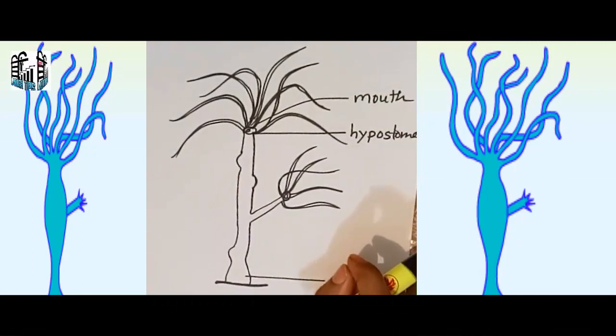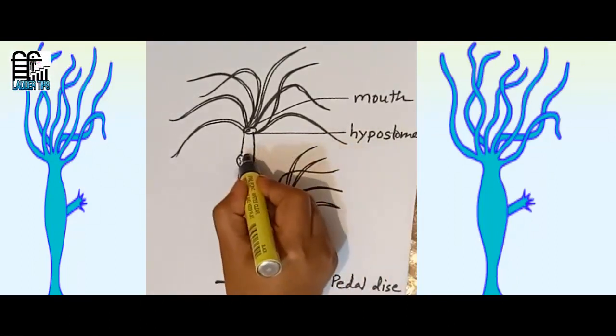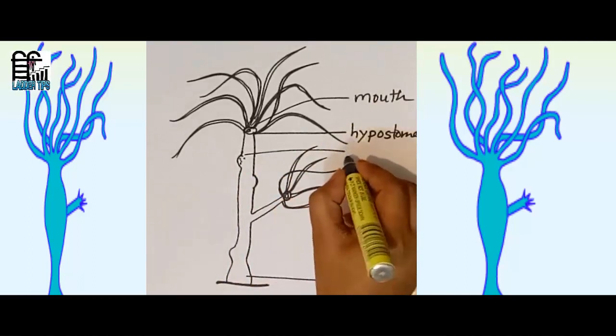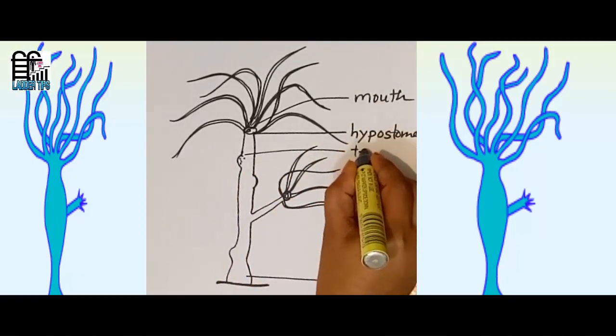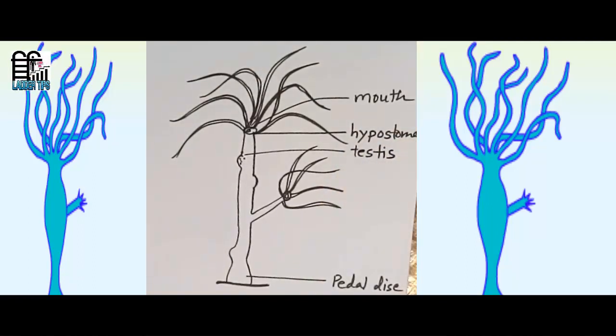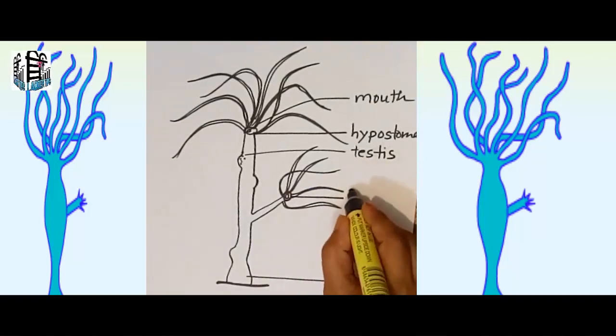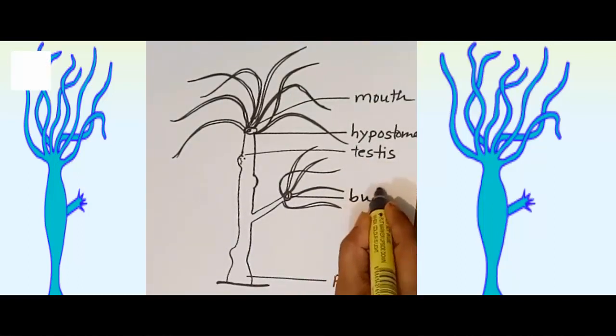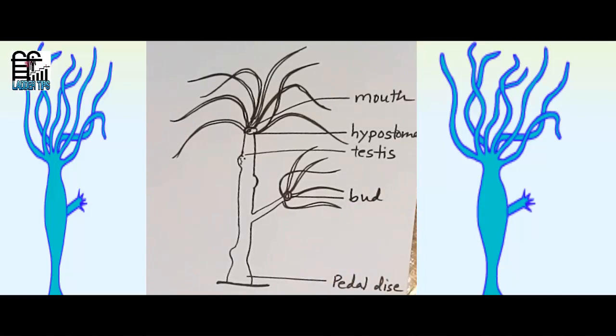Then this is actually testis. Hypostome, then this is a new bud of Hydra. So before that I have to write, I have to label that is trunk.